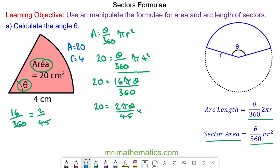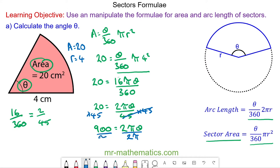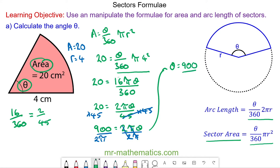I'm going to multiply both sides by 45 to cancel out the division. 20 times 45 is 900, so 900 is equal to 2πθ. To make theta the subject, I'll divide both sides by 2π — these will cancel — leaving theta equal to 900 over 2π. Simplifying by dividing both by 2 gives theta equal to 450 divided by π, which as a decimal is 143 degrees to the nearest degree.